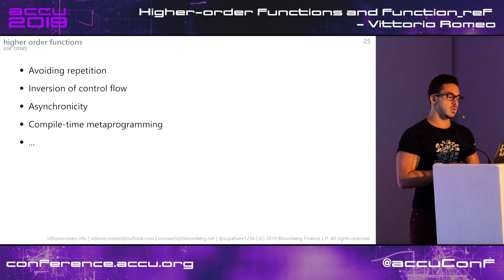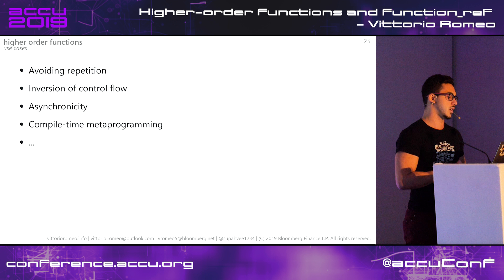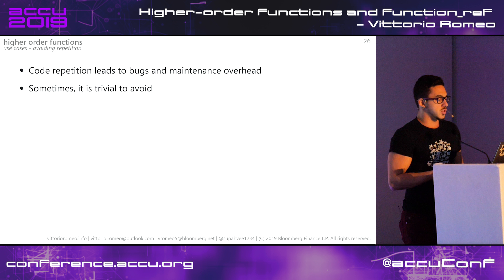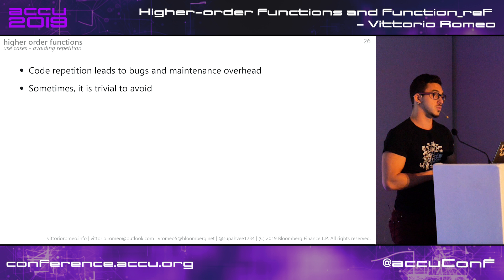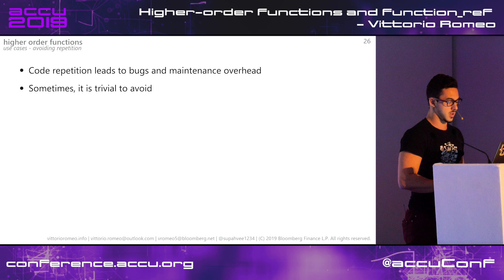The main use cases for higher-order functions, broadly categorized, are: avoiding repetition of code, inversion of control flow, asynchronicity, and compile-time metaprogramming. Avoiding repetition is important because code repetition, even if minimal, leads to bugs and maintenance overhead. As soon as you have two pieces of code that need to be kept in sync, that's already overhead - people need to remember to update both at the same time.